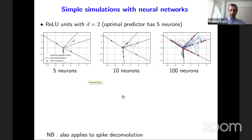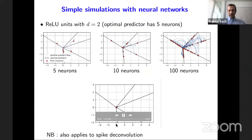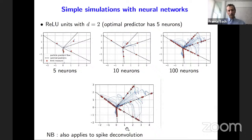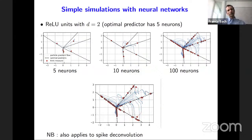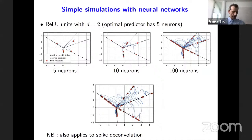A video shows the dynamics: neurons start distributed in all directions and then move, following non-straight and quite specific paths, before ending up in the correct positions — highlighting global convergence. This is not a straight-line trajectory; the neurons move in very particular directions determined by the mean-field dynamics.